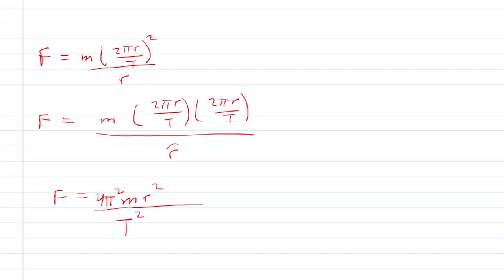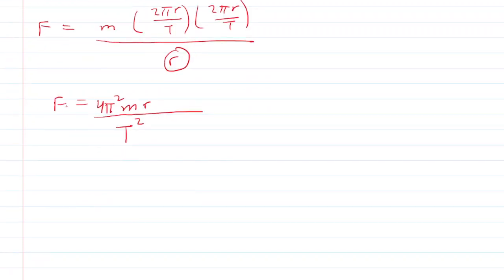We can actually simplify further. r² divided by r is just r in the numerator. So we'll cancel out a factor of r. And now we are in good shape here, because we have force as a function of the period.